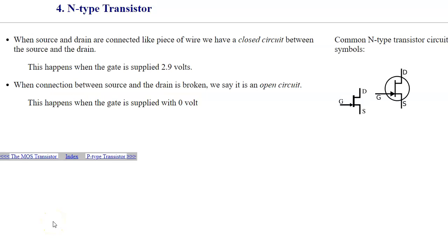There are two types of transistors: n-type and p-type. In case of an n-type transistor, when the source and the drain are connected like a piece of wire, it's a closed circuit. This happens when the gate is supplied 2.9 volts of electricity. These are common n-type transistor circuit symbols. This type of transistor makes a closed circuit, which means that electricity flows from the source to the drain when the gate is supplied 2.9 volts of electricity.